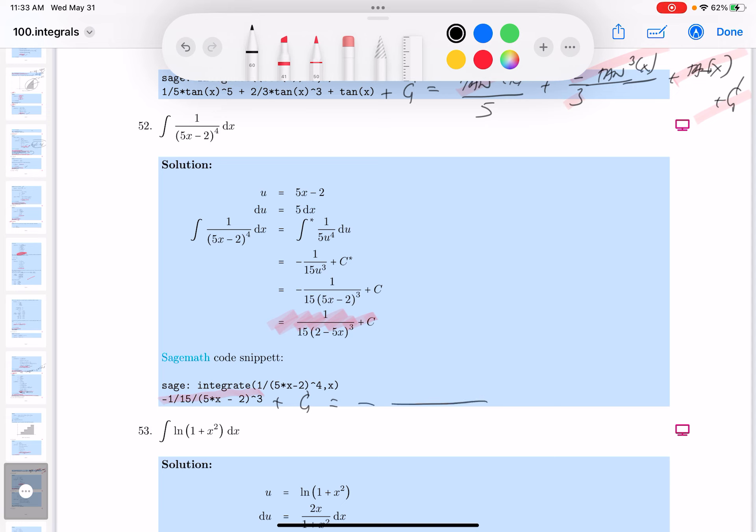And what do you get there? You get minus, and that's going to be 1 over, looks like 15. And then you get, let's see, 5x minus 2 cubed.